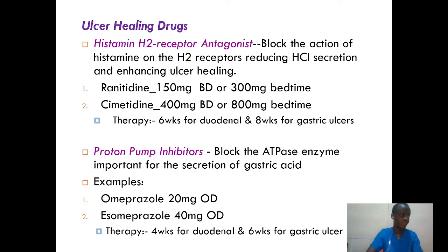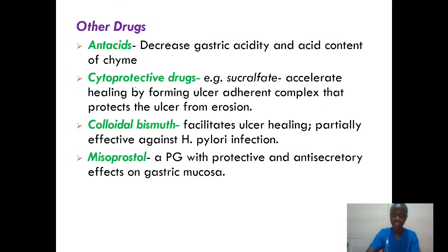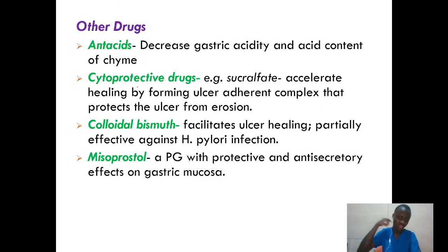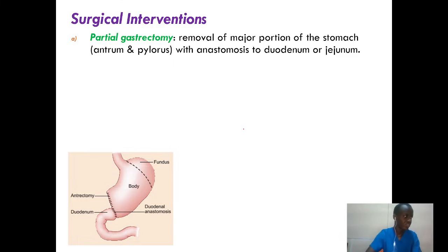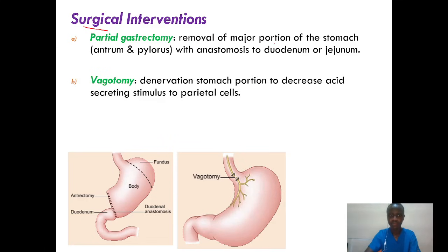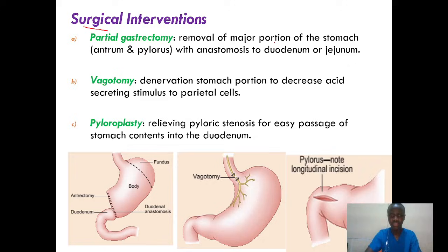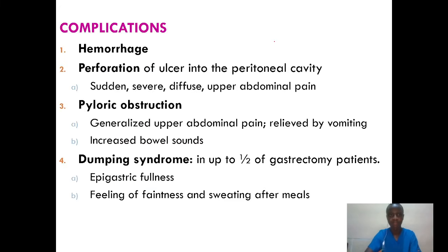Other drugs include antacids to decrease gastric acid contact. We can do cytoprotective drugs to protect the GI system. We can also do misoprostol, which is a prostaglandin with protective and anti-secretory effects on gastric mucosa. If all this does not work, we can go for surgical intervention, which is subtotal gastrectomy — the removal of a major part of the stomach — depending on how the patient presents and the location of the ulcer.